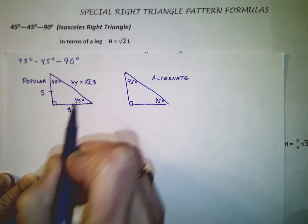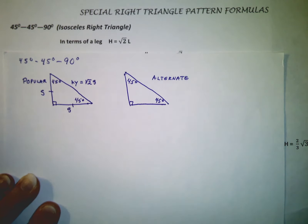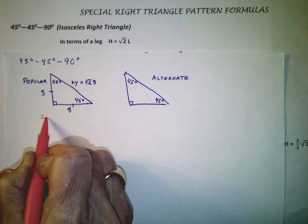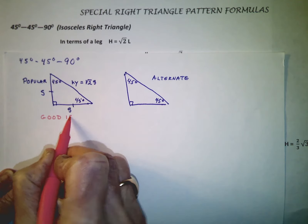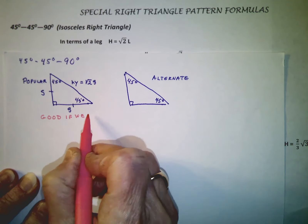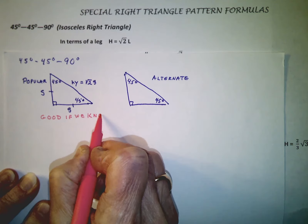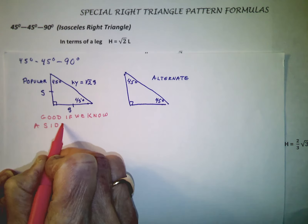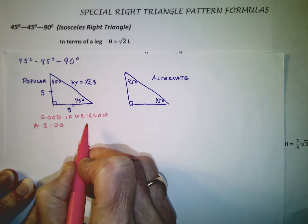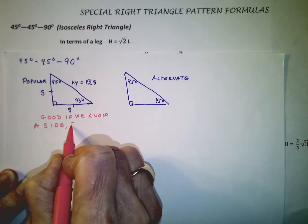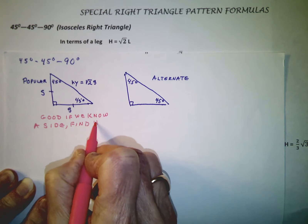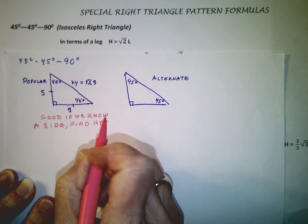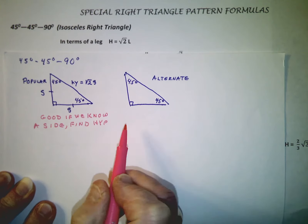This particular representation is good if we know one of the sides and we need to find the hypotenuse, because whatever the side is, you just multiply it by the square root of two and we're done.